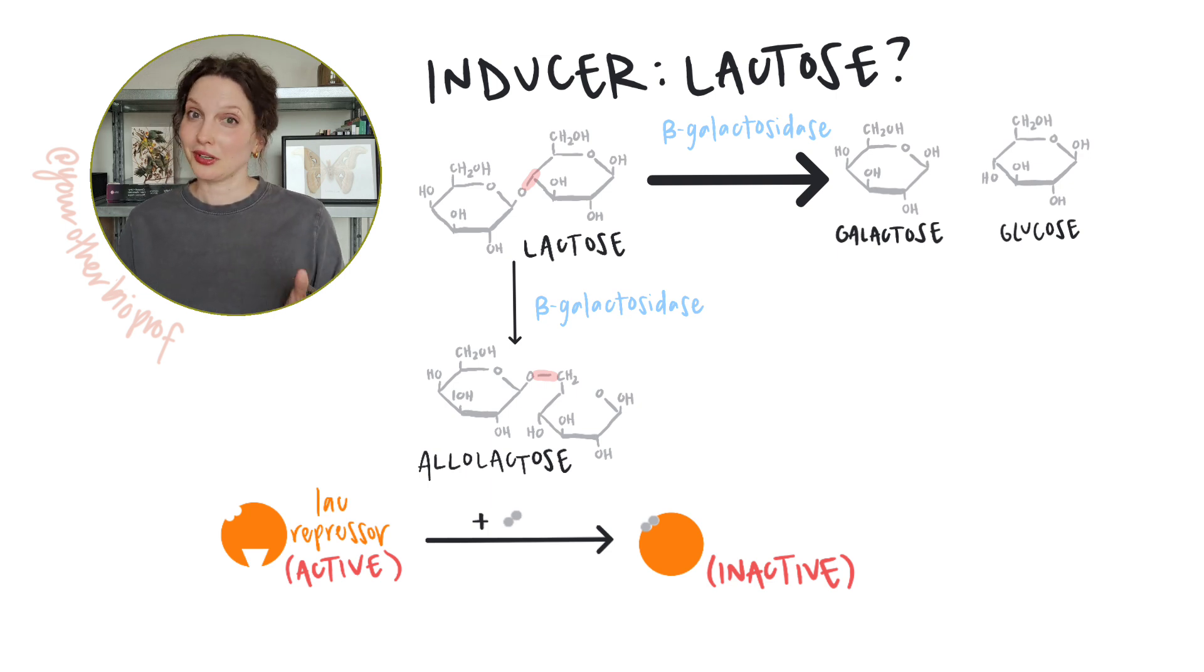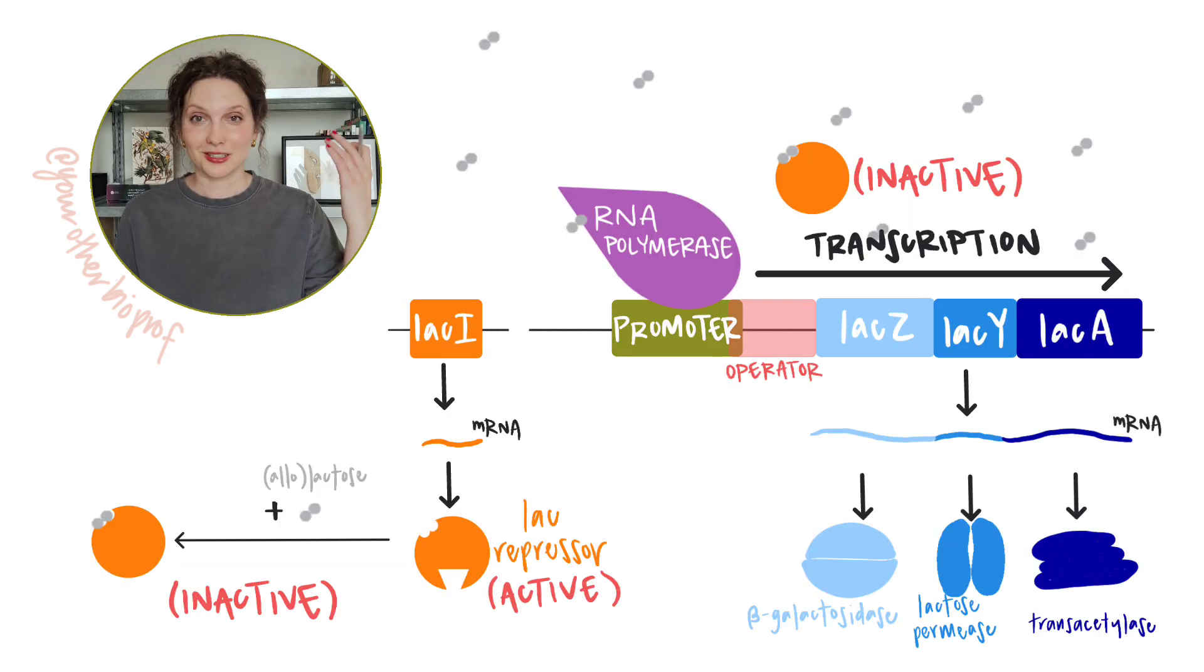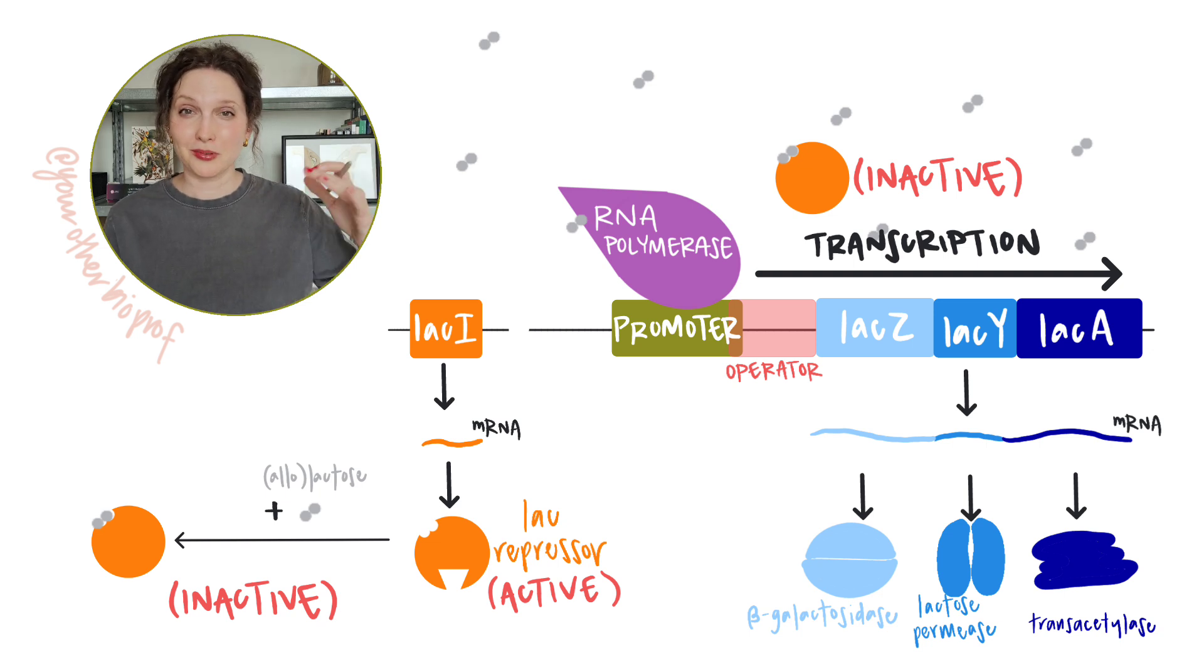But for the sake of simplicity, when you're looking at models and such, some classes just like to keep things a little bit more simple and just call lactose the inducer. So when lactose is available, it's going to be brought into the cell by permease. Beta-galactosidase is going to convert some of that into allolactose. That's our inducer. The operator is going to be freed up due to the repressor being inactivated. We've got transcription going. We are producing structural gene mRNA products and proteins to break down lactose and our lactose levels start to drop because we're metabolizing it.